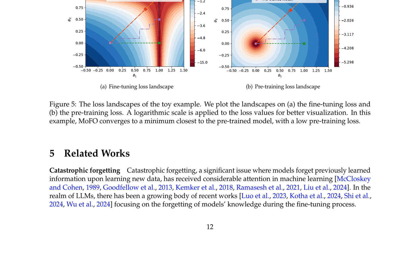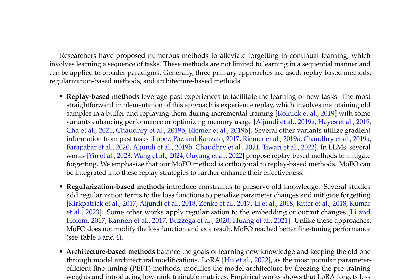The paper discusses related works on catastrophic forgetting, a significant issue in machine learning where models forget previously learned information upon learning new data. Recent works have focused on forgetting of models' knowledge during the fine-tuning process, particularly in the context of large language models. Researchers have proposed numerous methods to alleviate forgetting in continual learning, generally falling into three primary approaches: replay-based methods, regularization-based methods, and architecture-based methods. Replay-based methods leverage past experiences through experience replay, maintaining old samples in a buffer and replaying them during incremental training, with several works proposing replay-based methods for LLMs.